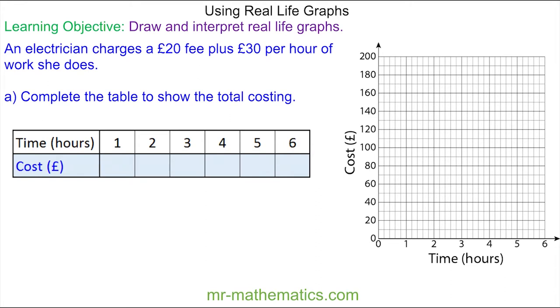So if we work for one hour, we have the £20 call out fee plus one lot of the hourly charge, which is £30. So we have 20 plus 30, which is £50 for one hour's work.